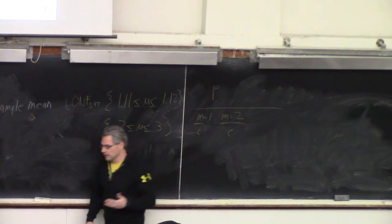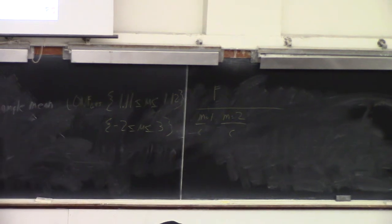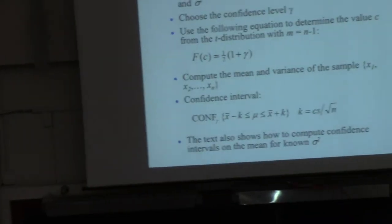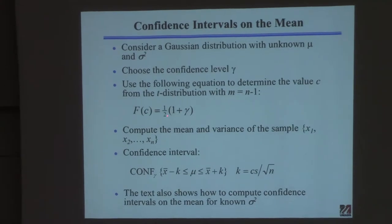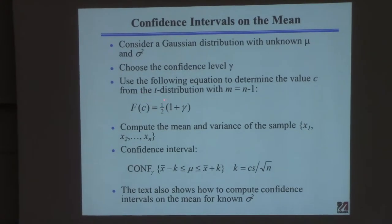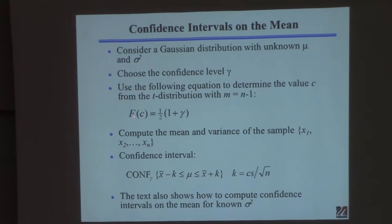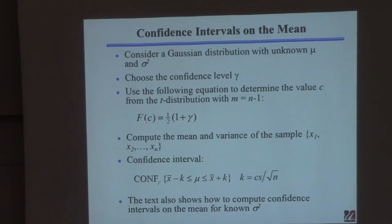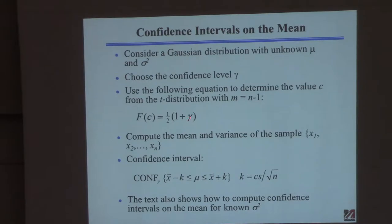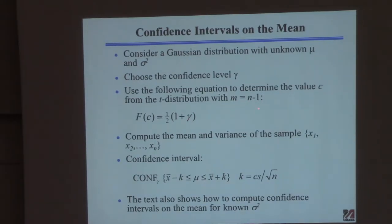I don't have easy access to show you the table, but you should look at it in your book. You'll see that to pick the c value — called the critical value — you need to know the value of the function f, which is the t-distribution value with a certain number of degrees of freedom. Once you know f (from specifying gamma) and m (from the number of samples), you can find c from the table.